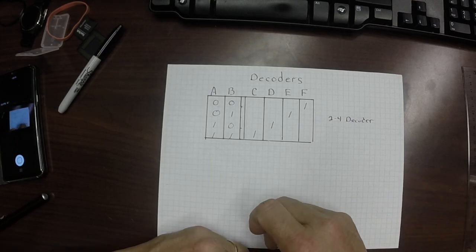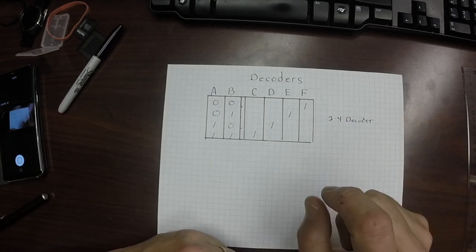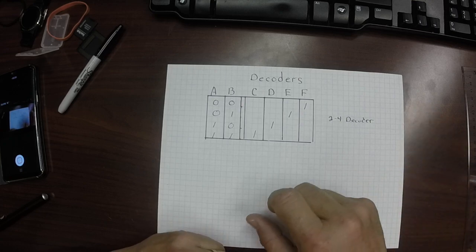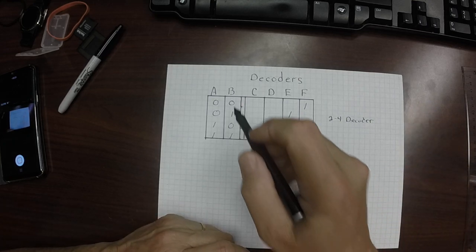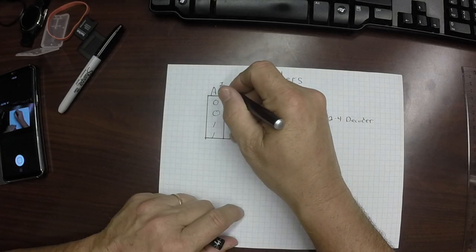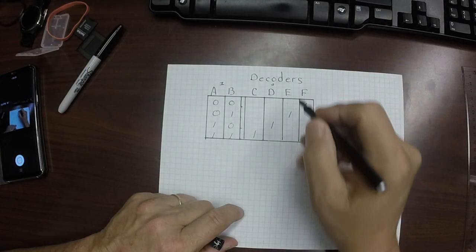Think of a decoder like this. We want to be able to turn a signal on, one of many. What I'm going to illustrate to you here is what's called a 2-4 decoder. So I have two inputs. This is our inputs over here, and these are our outputs right here.